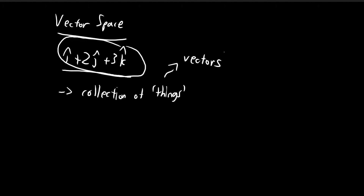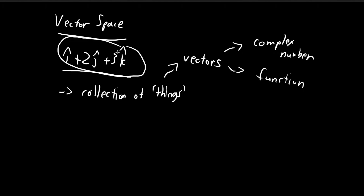They could actually be something like a complex number, or even a function. So these are just two examples — there are a whole bunch of others. This goes to show that vectors don't have to be Euclidean vectors; they could be complex numbers, they could be functions, they could be anything else.